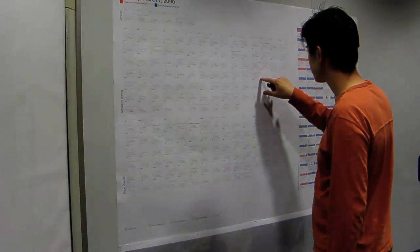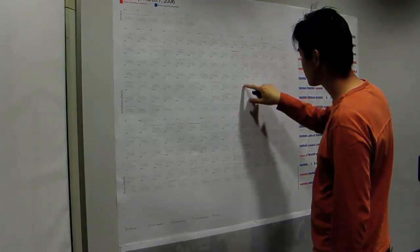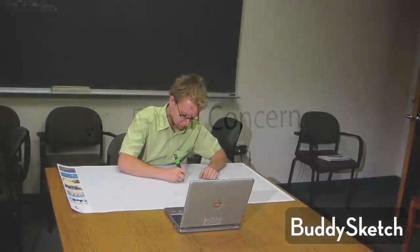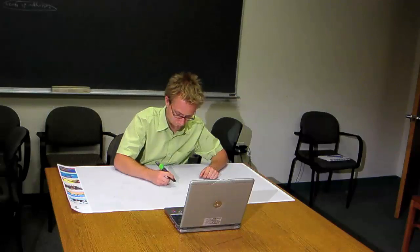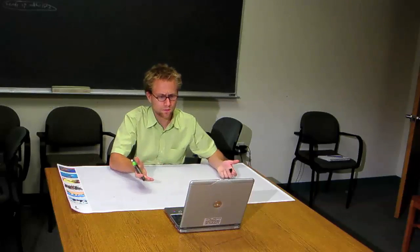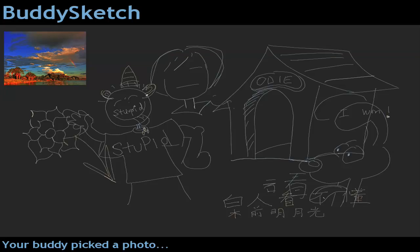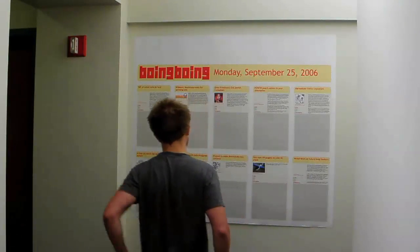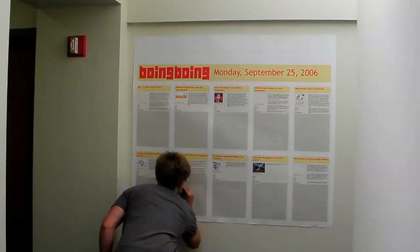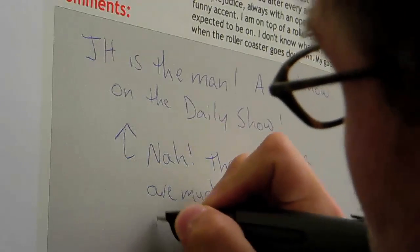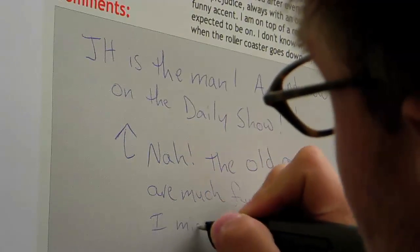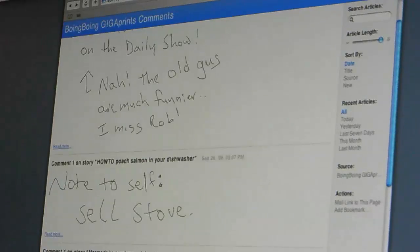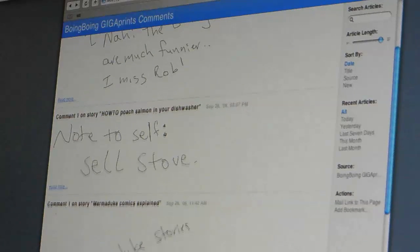The network monitoring application introduced earlier supports remote, asynchronous collaboration by allowing users to report concerns to a system administrator. A third application, BuddySketch, augments the remote-synchronous collaboration of teleconferencing with sharing of sketches. The sketches of one user appear in real-time on the secondary display of the other user. A fourth application displays blog entries from an RSS feed in a public space. Users are able to comment on these entries with a digital pen. The ink affords co-located, asynchronous collaboration, and immediately after a comment is left, it is made available digitally via an RSS feed, enabling remote collaboration.